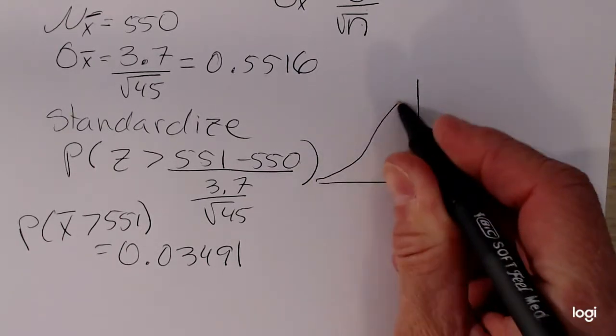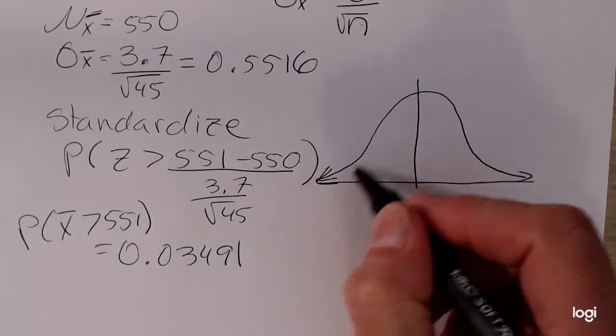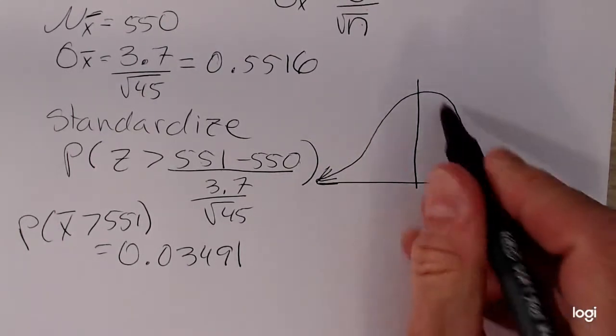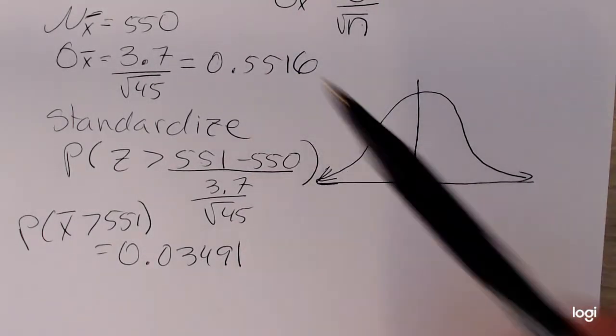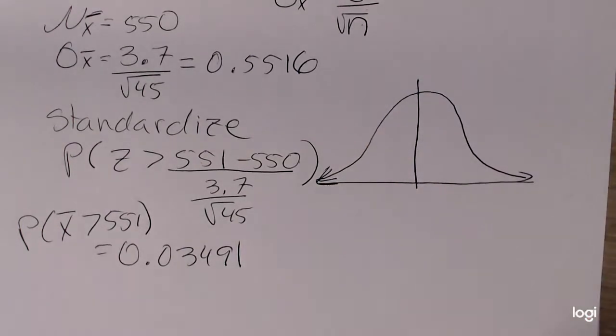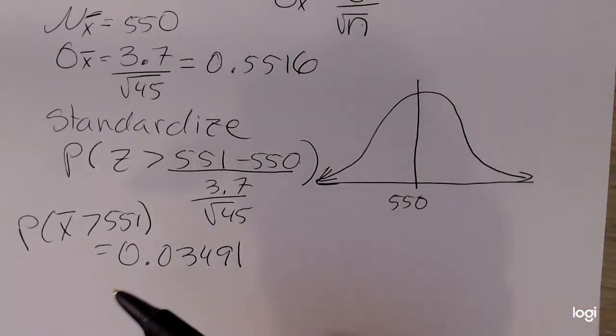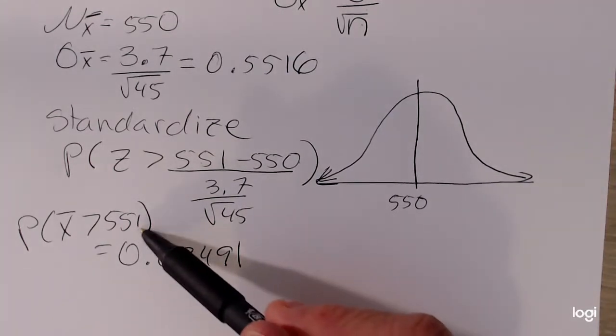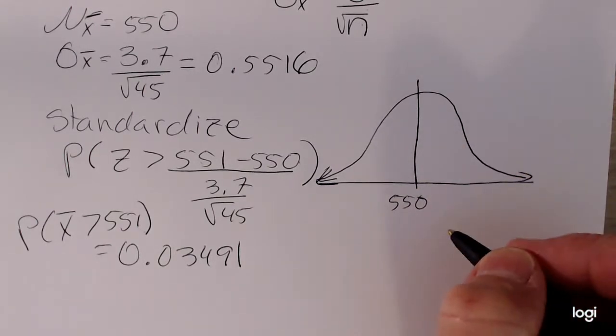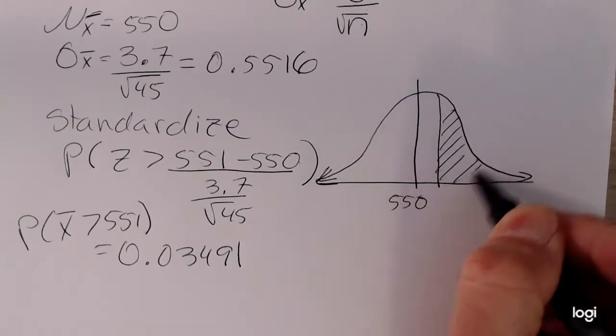But if you're still a little rusty at this, you can sketch the bell curve. Now this might be a little bit of a more skinny bell curve, because our standard deviation is pretty small. So you can treat this as a visual aid. Our mean is 550, and my value along the horizontal axis that I am concerned with is 551, so that's above the mean, and the greater than case means I want to shade to the right.